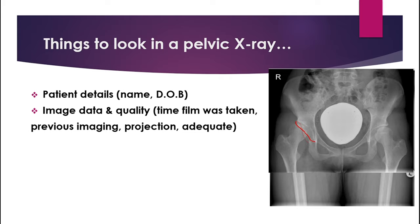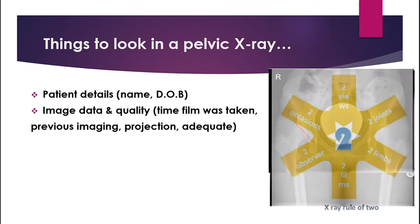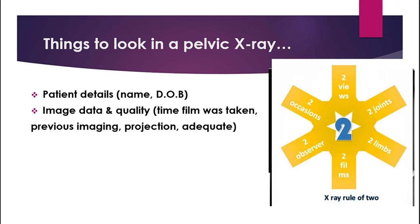There is a thing called the rule of two in orthopedic radiology. It means when you have an orthopedic x-ray or anything related to bones, note that there should be two views — it can be AP view, PA view, or many other views — two joints, which means one joint above and one joint below, two sides, and two occasions, meaning different timing.